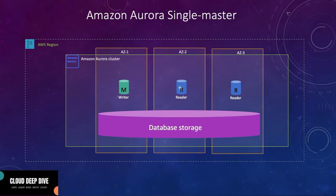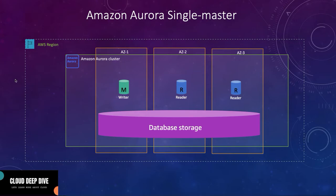You can have multiple read replicas, so you will get one cluster endpoint with the writer endpoint and one reader endpoint. Your writer endpoint will take all your write transactions and send those to your writer node, and your reader endpoint will take all your read transactions and load balance between your read replicas.